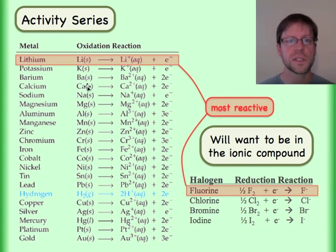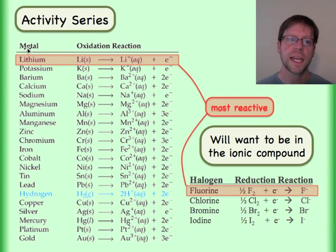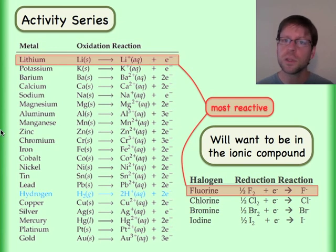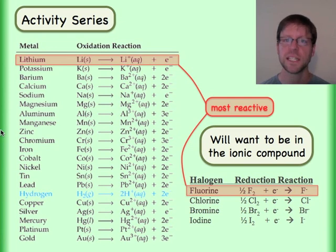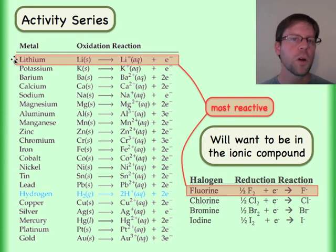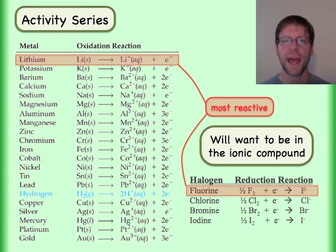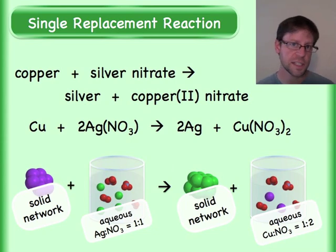So it's nice to look this up in a table, on the internet, or wherever you can find the activity series. Remember, the things that are higher up are going to be more reactive, which means they're going to end up as the thing in the ionic compound. So let's look at some examples.